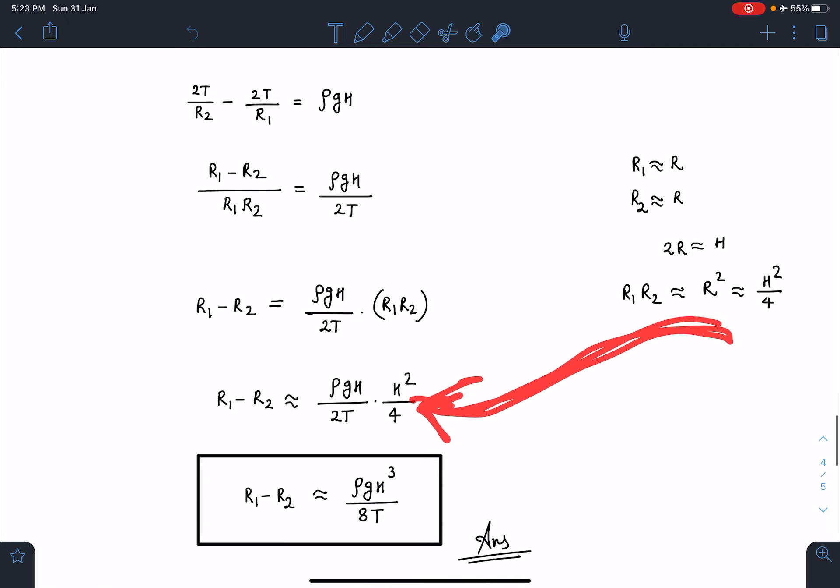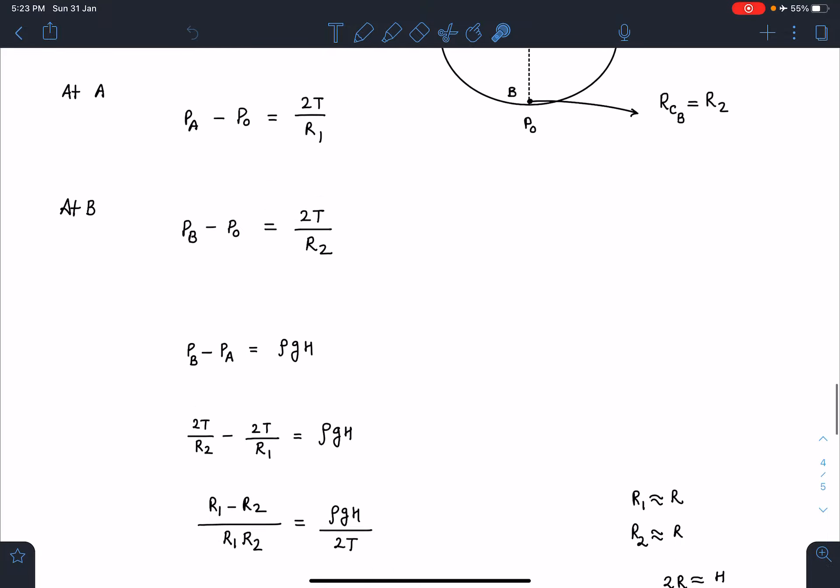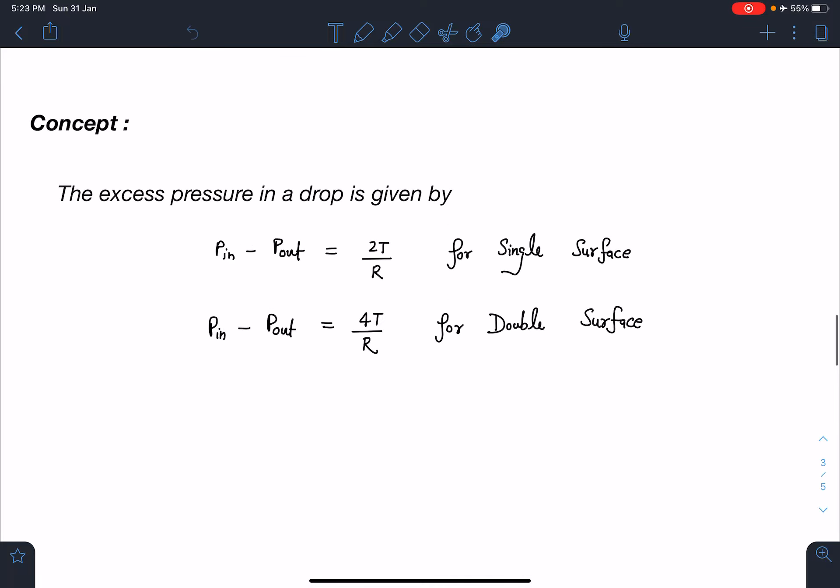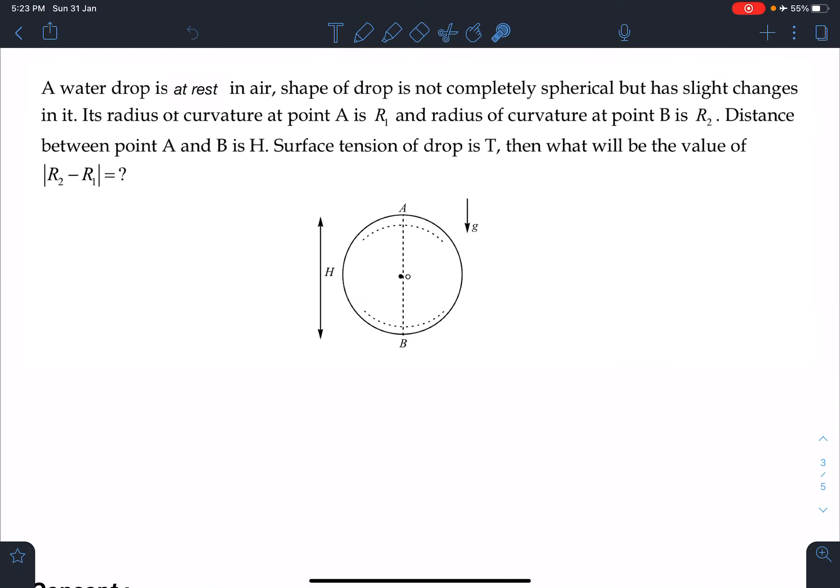When I simplify this, I get R1 minus R2 equals ρgH³/8T. This is the final answer for my problem. I hope you have enjoyed it. It depends a lot on the assumption here. This is from Irodov but it is a very nice problem, a nice application of surface tension concept.